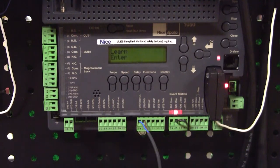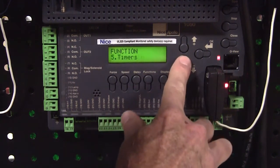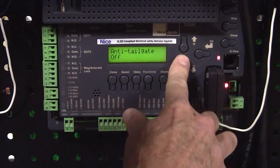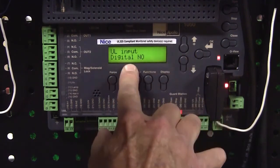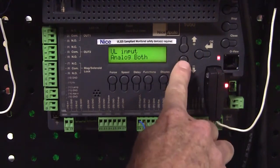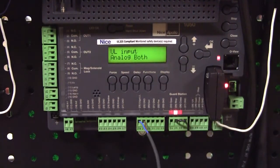Now let's go down to UL input digital normally open. So to change that, we press OK. We're going to change it to analog. Now here we have choices for both open or close. Both would be a wraparound edge protecting the gate both opening and closing, and this is only a selection for our swing gate application.